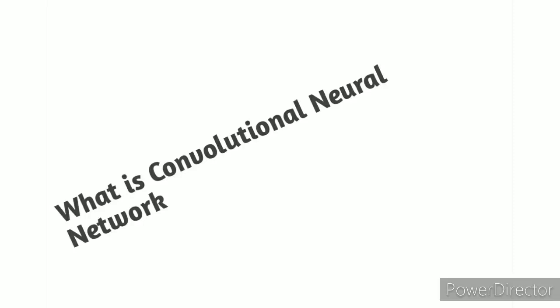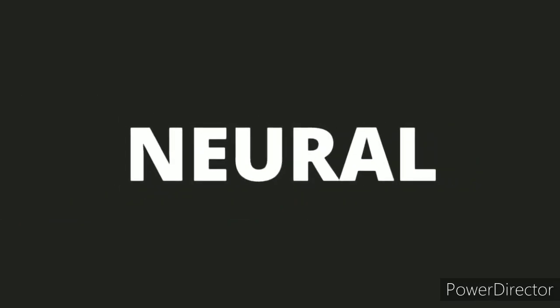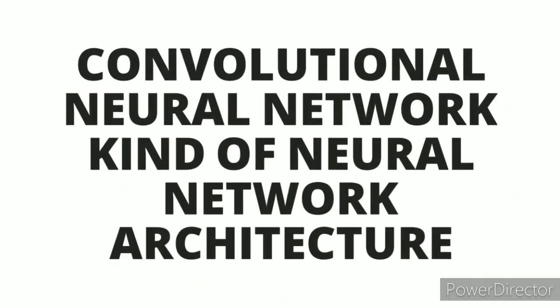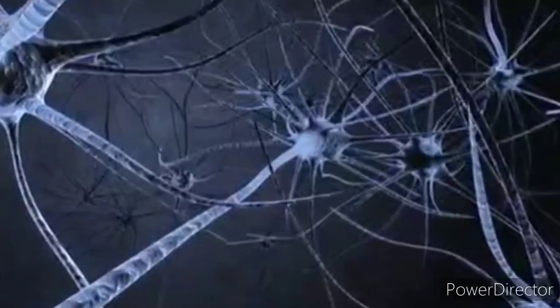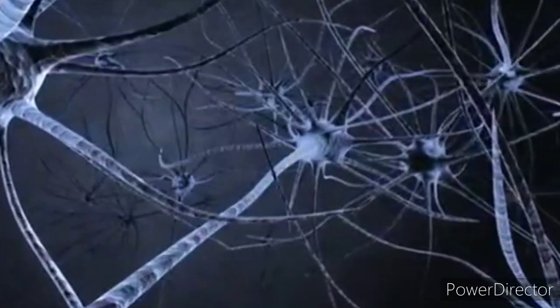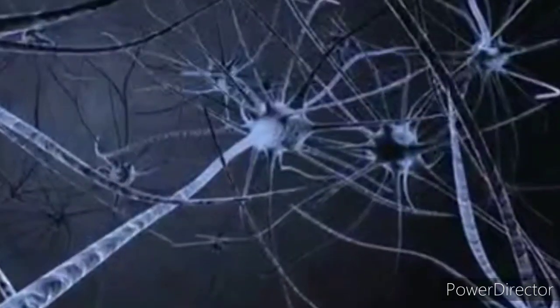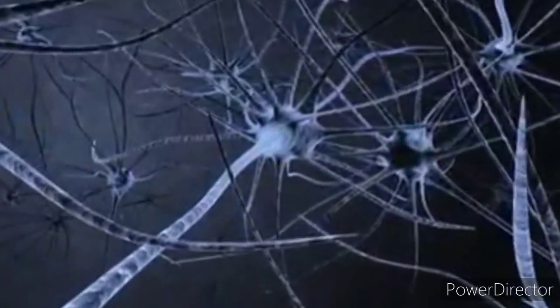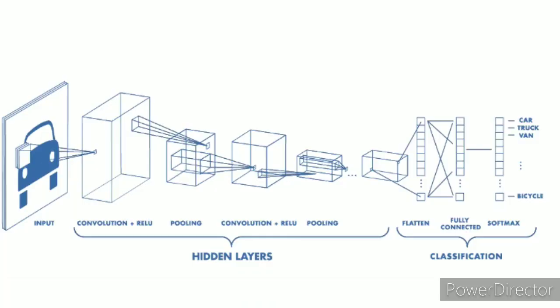What is Convolutional Neural Network? Convolutional Neural Network is one of the kinds of neural network architectures. Its architecture is different than feedforward neural network. This architecture mimics the connections of neurons in the human brain. This network takes an input image and assigns weights to features in the image to output the predictions. The usefulness of CNN lies in its ability to learn features from images automatically without taking help of hand-engineered features.